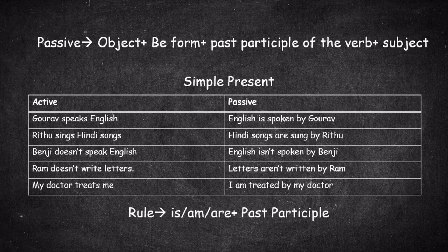The rule for the simple present passive form is: is / am / are plus the past participle of the verb.